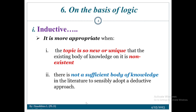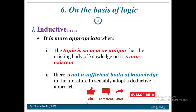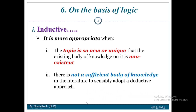The second condition is when there is not a sufficient body of knowledge in the literature to sensibly adopt a deductive approach. In order to follow deductive reasoning, you need to have a theory. If there is no theory or no sufficient body of knowledge regarding that particular issue, we are going to follow inductive reasoning from specific to general.